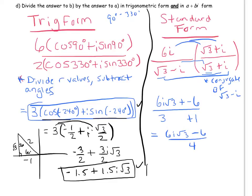Which I can split up and write as... Well, I'm going to put the negative 6 first. Negative 6 over 4 plus 6i root 3 over 4. And negative 6 over 4, you'll notice, is negative 1.5. And 6 over 4, again, is 1.5, so it's plus 1.5i root 3.